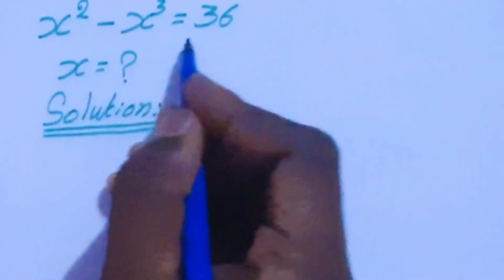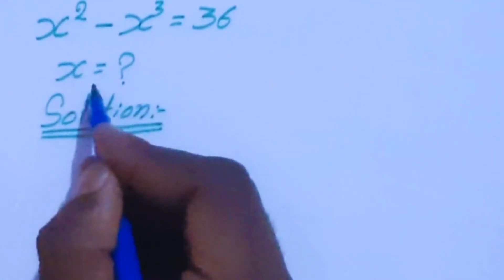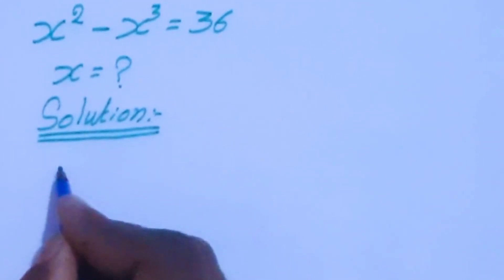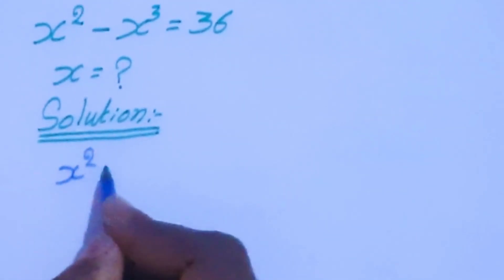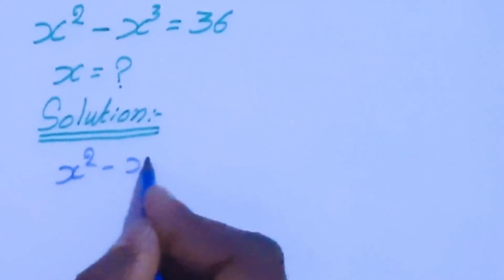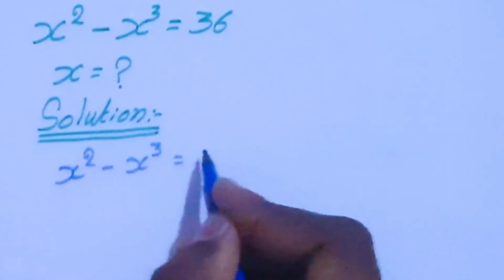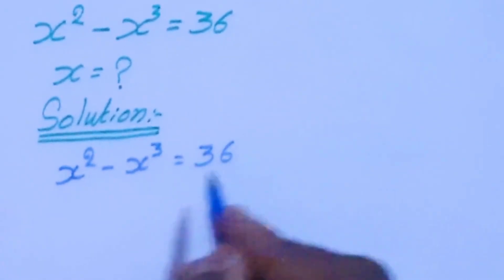Hello viewers, welcome to the channel. Today we are going to solve this problem to find the x value solution: x squared minus x cubed equal to 36.